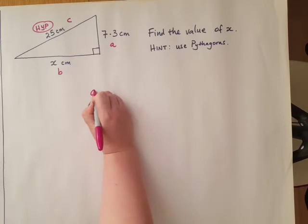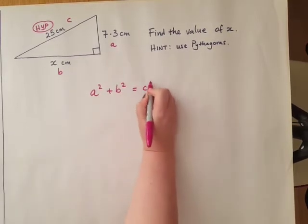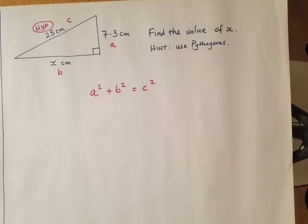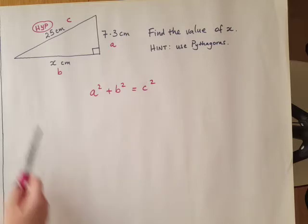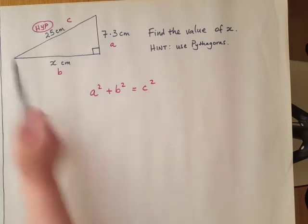Here we go. And now I'm going to write down these values that we know: the 25 and the 7.3. Common mistake is people put the 25 in the wrong spot. So the 25 is the hypotenuse, which is c, so it has to go here.